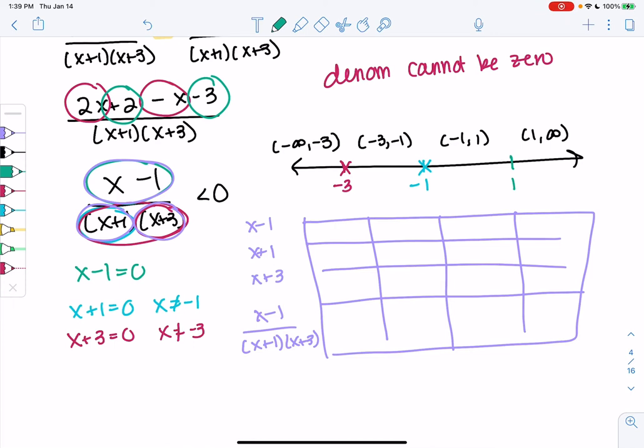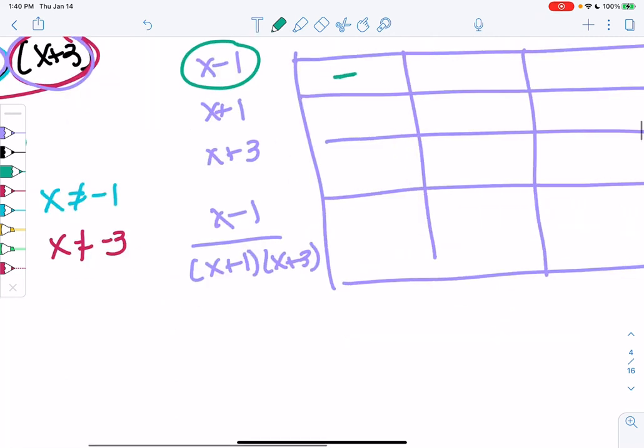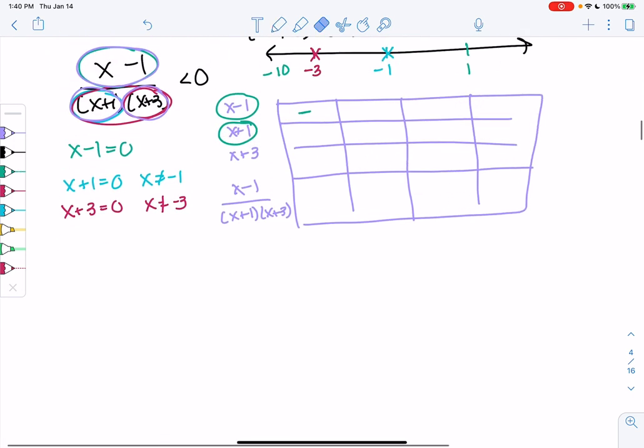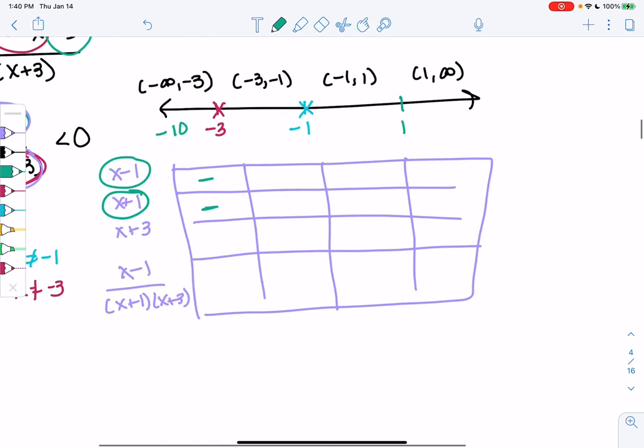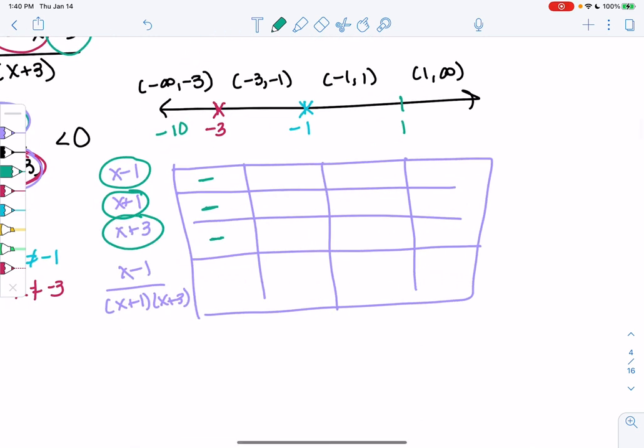And we'll pick some test values. Negative infinity to negative 3, I'm going to pick negative 10. You can pick any number you want, as long as it's less than negative 3. So we're going to plug into each one. Negative 10 minus 1 is negative 11, but I only care that it's negative. You might be using a calculator, but I want you to get to a point where you're doing this in your head because we don't care about the actual number. Negative 10 plus 1, since 10 is bigger, it'll stay negative. And then negative 10 plus 3 is still negative. So two of those negatives cancel out, that's positive, and then the third negative makes this interval negative.